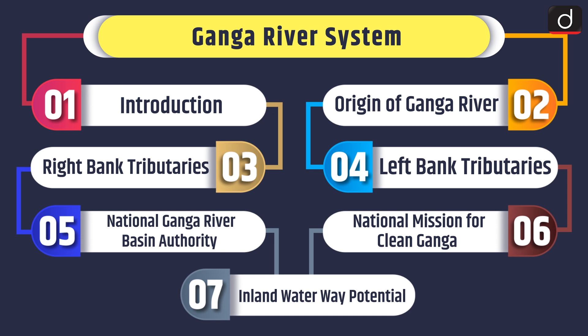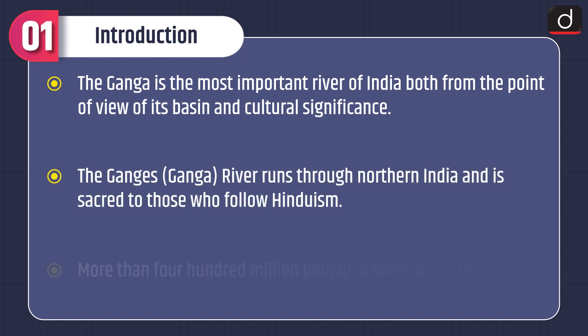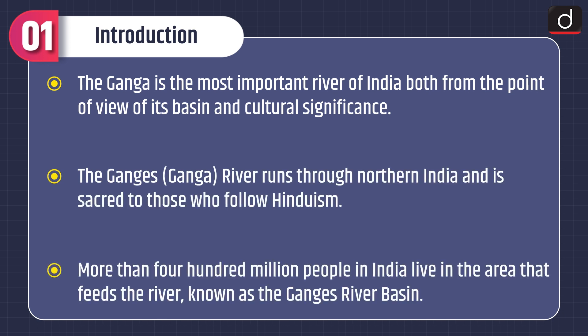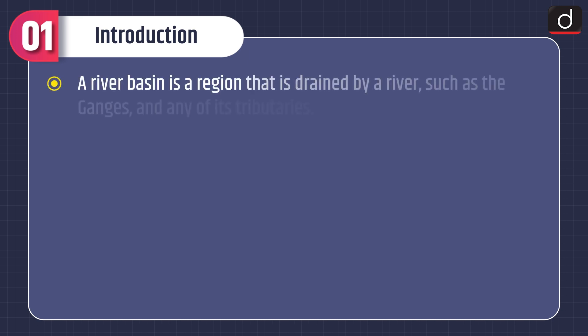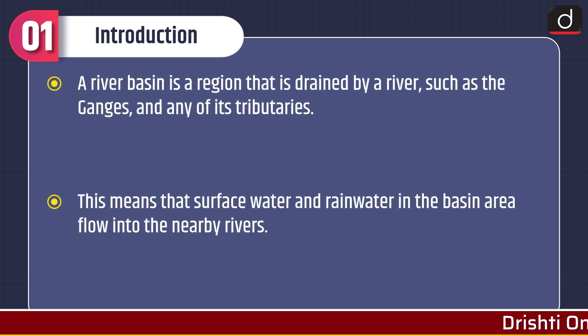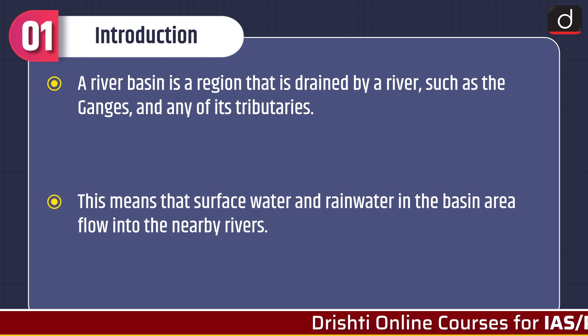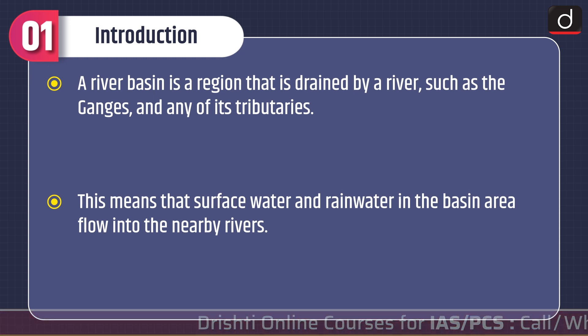The Ganga is the most important river of India both from the point of view of its basin and cultural significance. The Ganga river runs through northern India and is sacred to those who follow Hinduism. More than 400 million people live in the area that feeds the river, known as the Ganga river basin. A river basin is a region drained by a river such as the Ganga and any of its tributaries, meaning that surface water and drain water in the basin area flow into the nearby rivers.